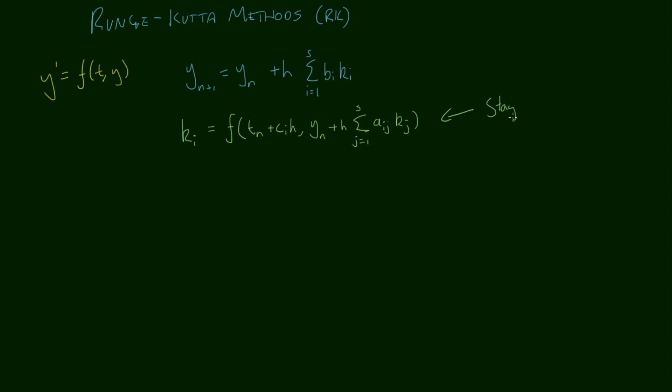These are what's known as stage values. The S in the summations is the number of stages we have. The number of stages will depend upon your accuracy of your method, usually.